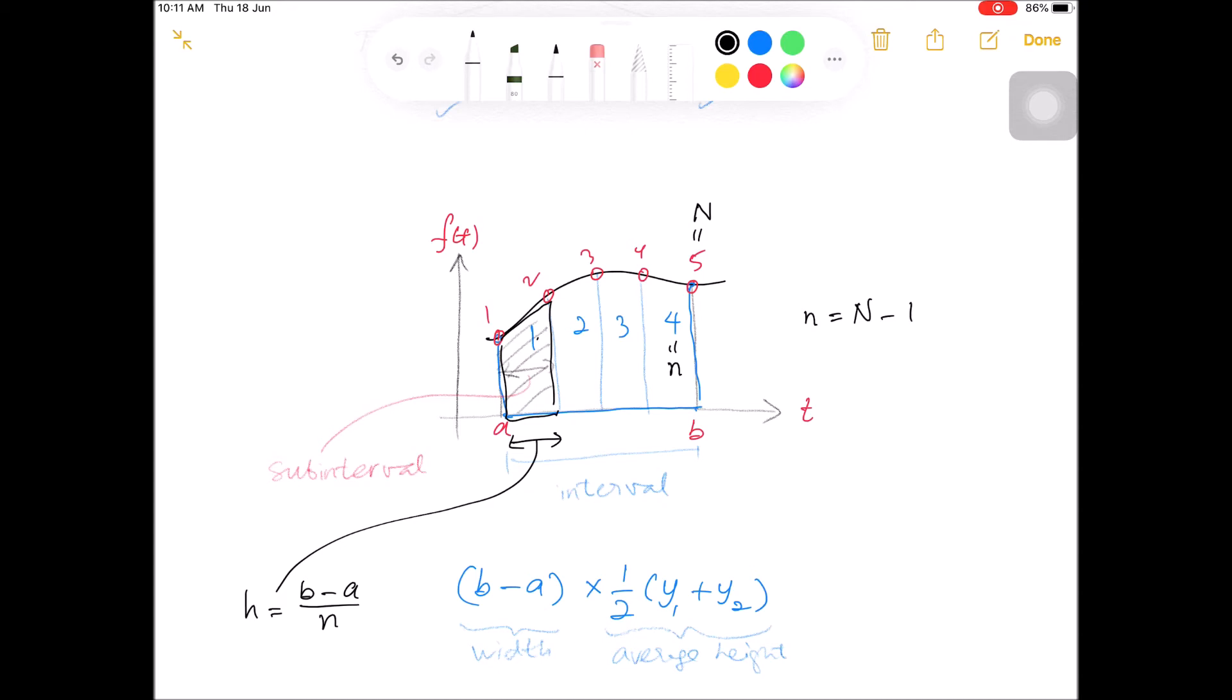And let us denote the height of the vertical lines as Y1, Y2, Y3, Y4, and Y5.